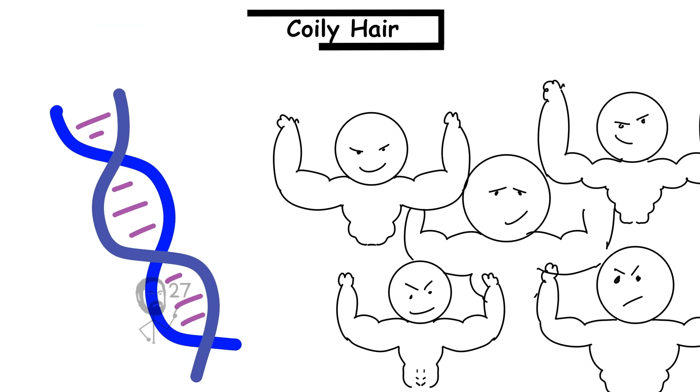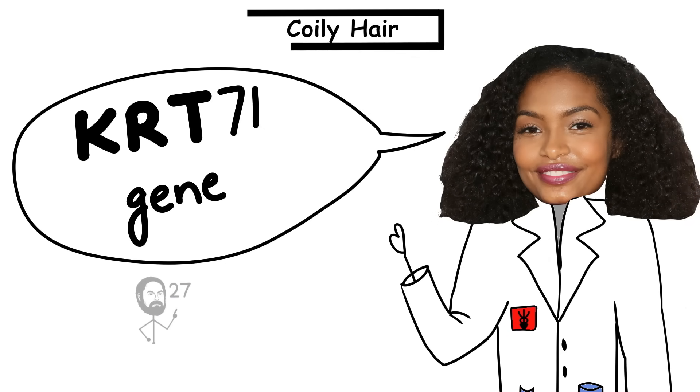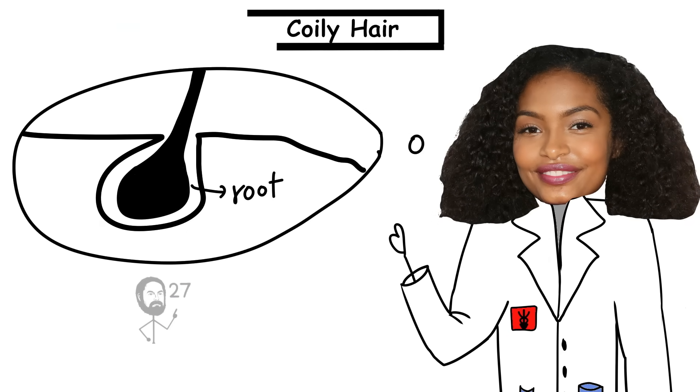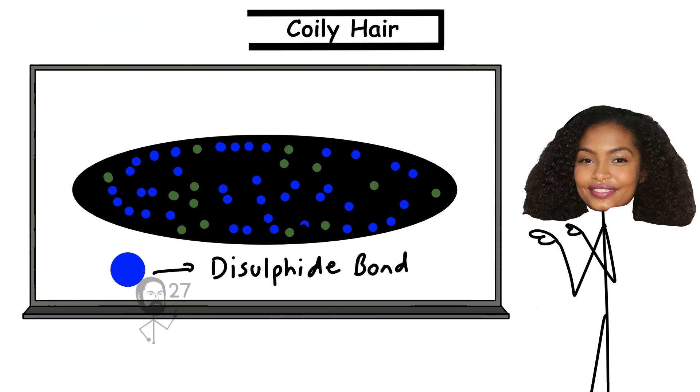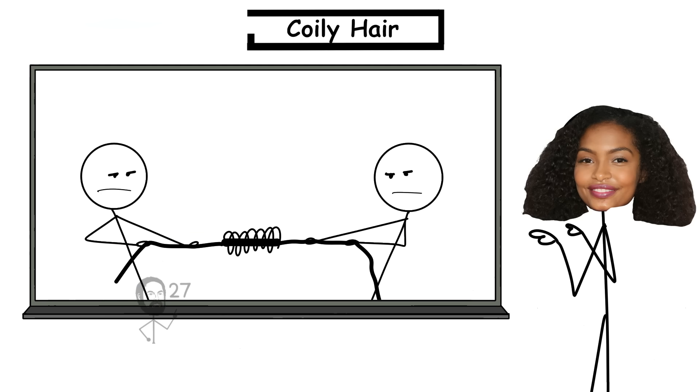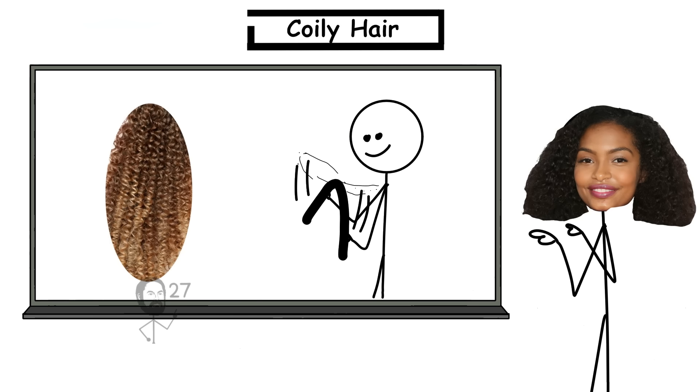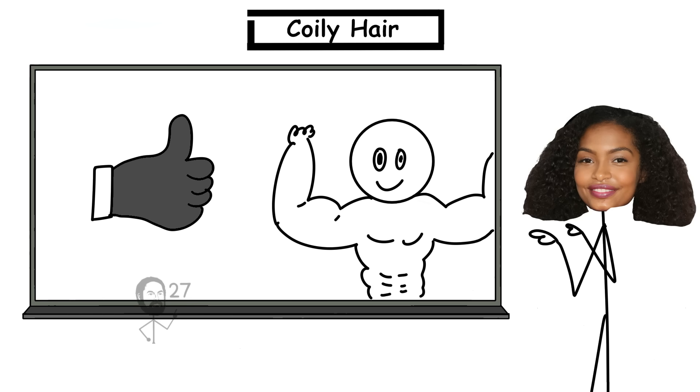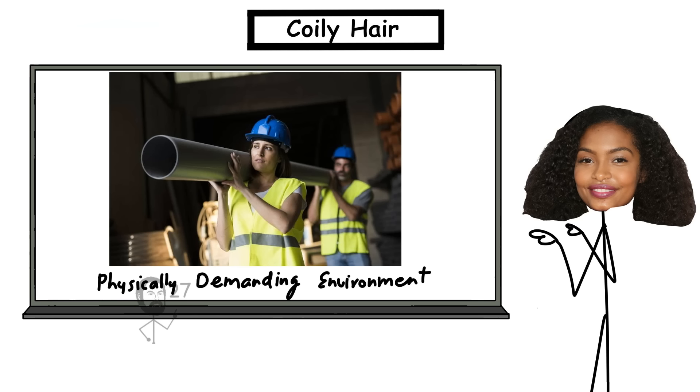Genetically, coily hair arises from multiple dominant variants affecting follicle shape and keratin structure, particularly KRT-71 and members of the KAP gene family, which help form the inner root sheath. The resulting strands are highly elliptical in cross-section and packed with disulfide bonds, making them both elastic and mechanically resilient. This high-tension, spring-like architecture gives coily hair the ability to bend and recoil without breaking—an advantage not just for physical durability, but for adapting to friction, wind, and movement in physically demanding environments.